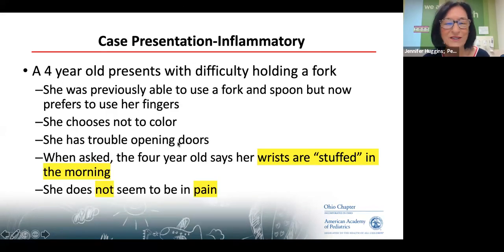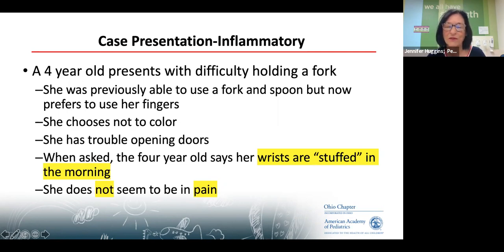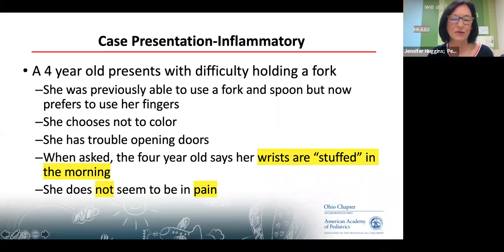Absolutely. This isn't uncommon — I asked a four-year-old how she was in the morning and she said her wrists were 'stuffed' because they were very, very swollen. We get a couple of these a year where they first get sent to developmental or to genetics because they lost a milestone — they were using utensils and suddenly don't. Don't forget about rheumatology in that situation.